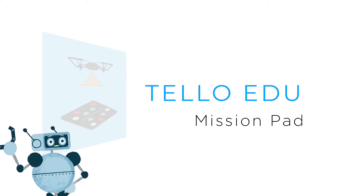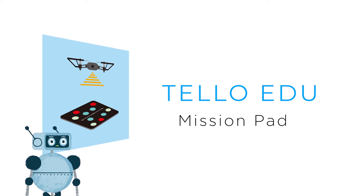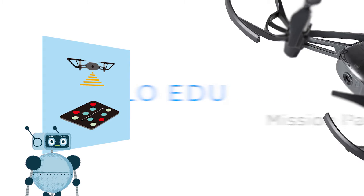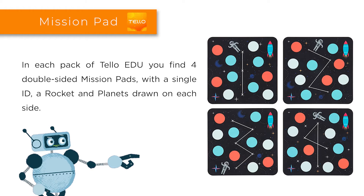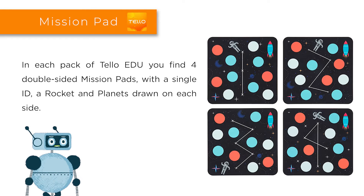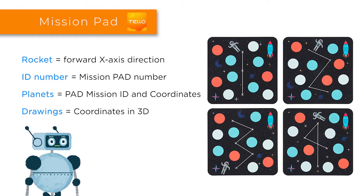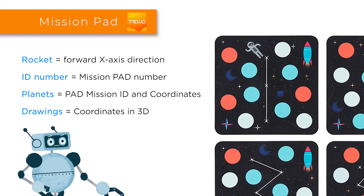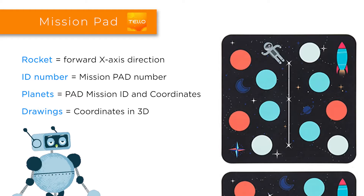Welcome to this video where we are going to see how the mission pad works — the pad you found in the Tello Edu box. In each package of Tello Edu there are four double-sided mission pads, with an identifier and a single ID. A rocket and planets are drawn on each side. The rocket represents the forward direction of the x-axis. The ID number can vary from 1 to 8, and is present on each side of the mission pad.